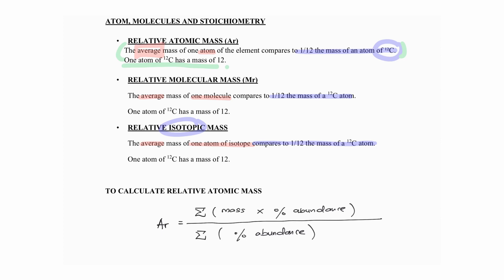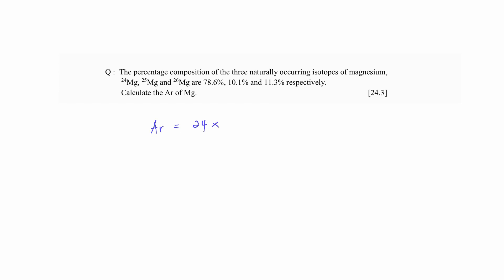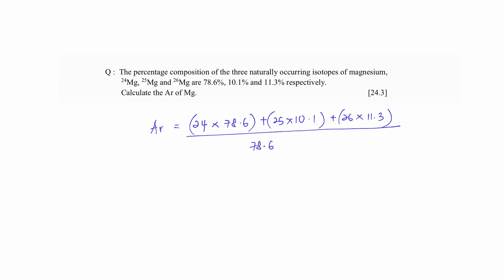Let's move into example questions. The molar mass of isotopes of magnesium is given together with their percentage abundance. We calculate the relative atomic mass of magnesium by multiplying the molar mass of each isotope by its percentage abundance, then summing — including 26 times 11.3 — and dividing by the total percentage abundance, which equals 100. With this calculation, we get 24.3, which is the relative atomic mass of magnesium.